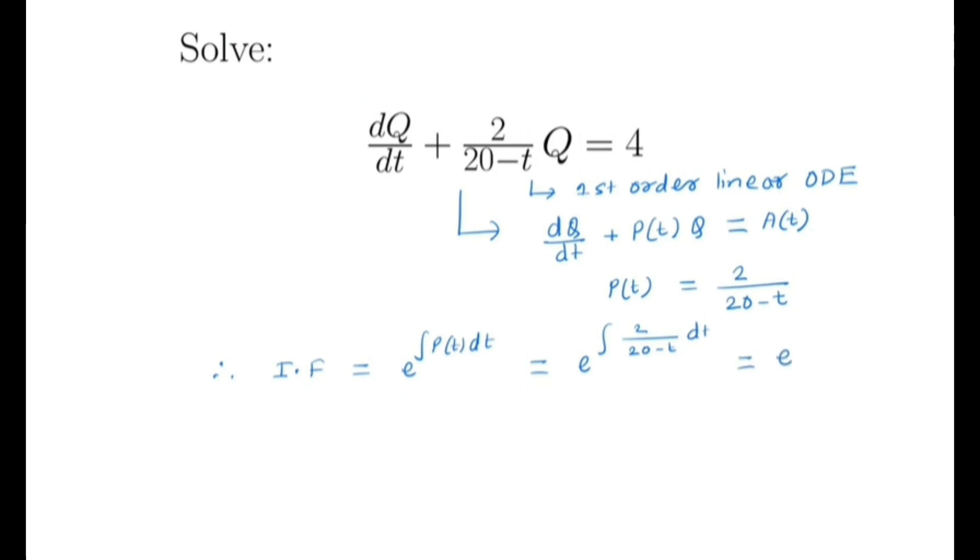By solving the integration we get e^(-2ln(20-t)). By simplifying we get e^(ln(20-t)^(-2)) which is nothing but (20-t)^(-2).